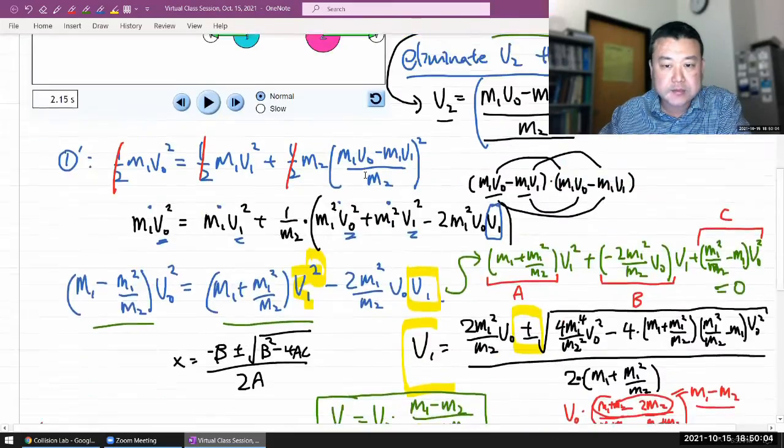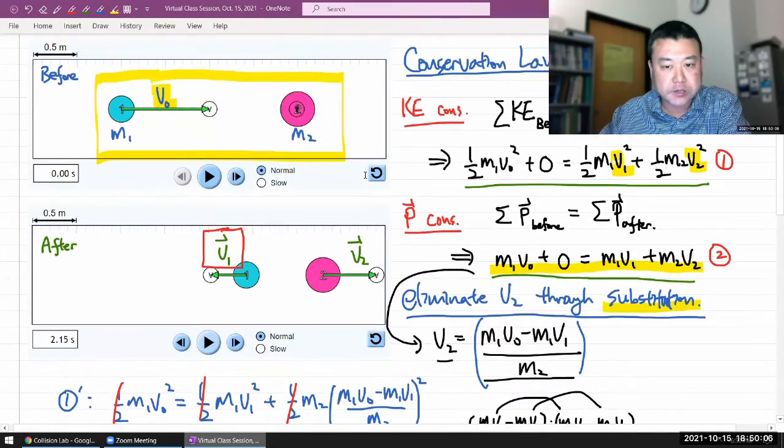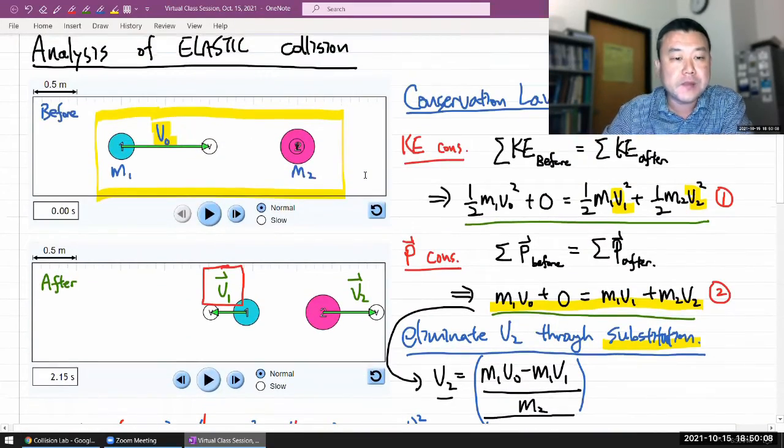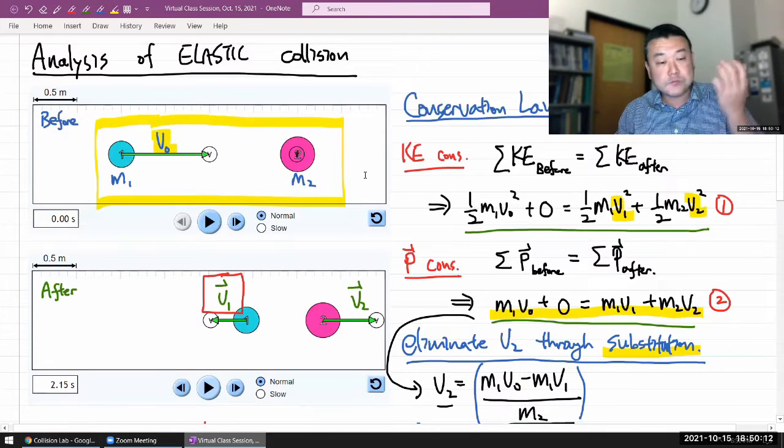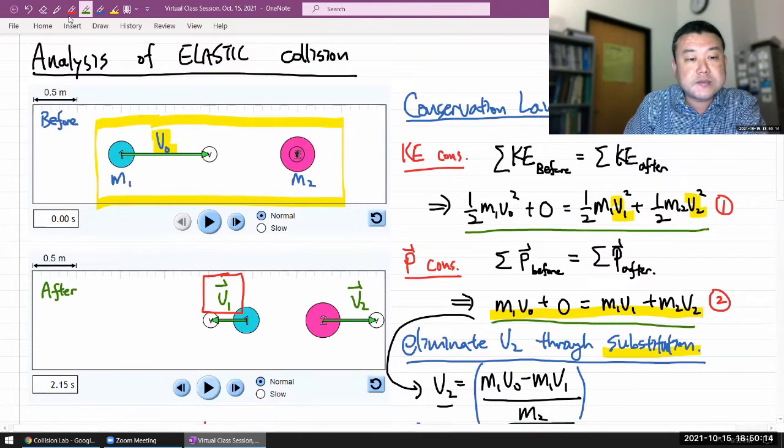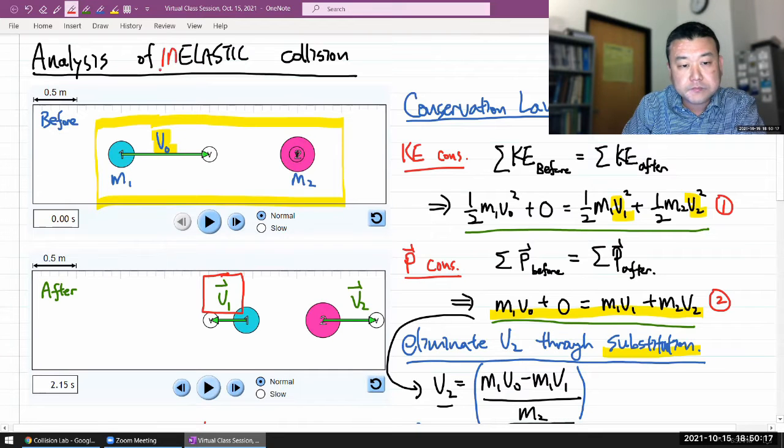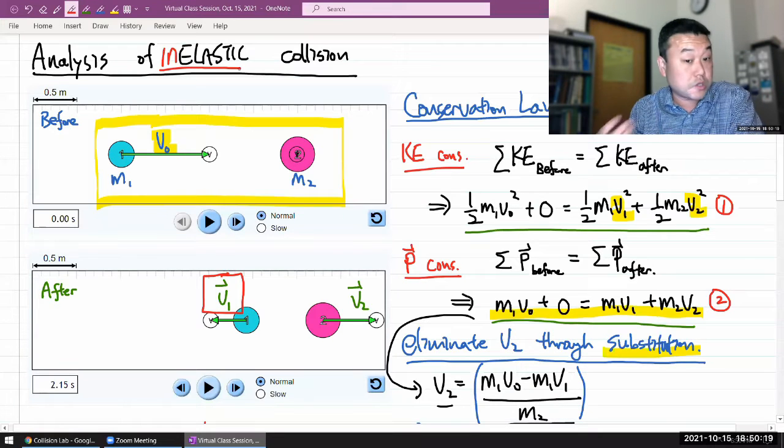So this is the analysis with elastic collision. The question that I want to ask is what changes when this is inelastic? What constraint goes away?